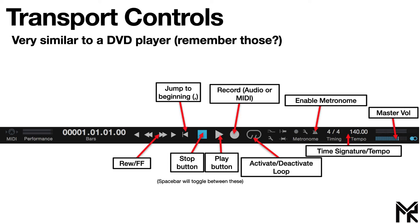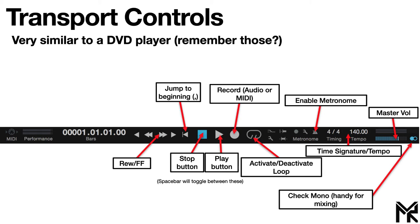Over here you have the master volume, which is independent of your overall master track volume. This is basically the preview volume coming out to your monitors, so if you have a separate audio interface this will adjust the volume of the audio coming out of it. Then you have this button which toggles from outputting in stereo to outputting in mono. This is really handy when mixing, because certain systems like laptop speakers, phone speakers, or certain club systems will play your tracks in mono anyway.